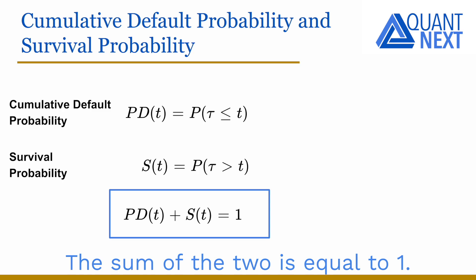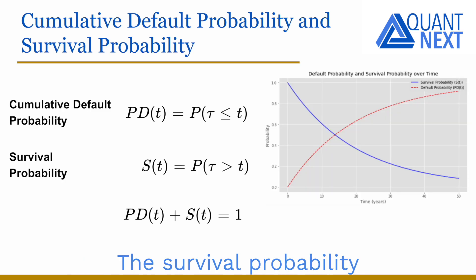The sum of the two is equal to 1. The survival probability, in blue on this chart, starts at 100% and decreases over time, converging to 0, while the default probability, in red, starts at 0 and increases over time, converging to 1.